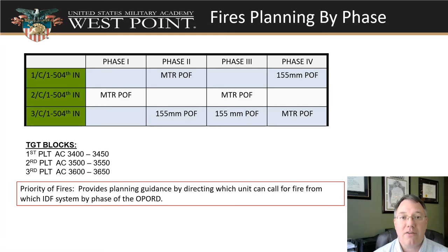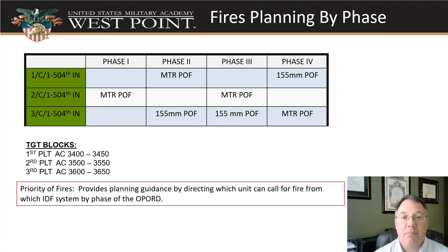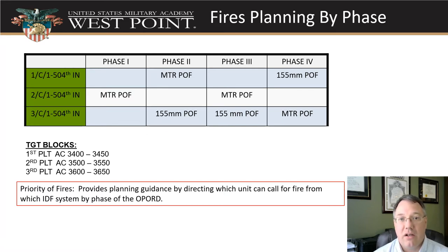If you don't have priorities of fire, you can still request them — just realize that someone else is going to have priority over you, and if they need something they get it first. That said, having priorities of fire lets the guns be laid in and organized toward a direction to support someone, so when you do have priorities of fire, you get them fast.